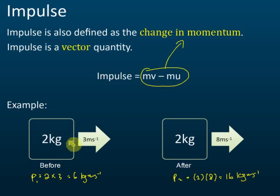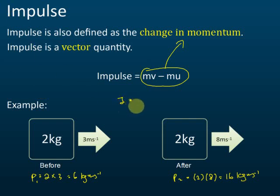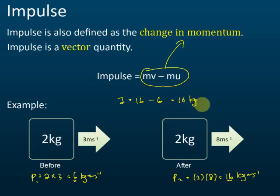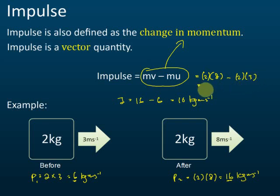When you give a force to this object and cause the velocity to change, we say an impulse is given to the object, because impulse causes momentum change. The impulse I equals the final momentum minus the initial momentum: 16 minus 6, which equals 10 kg m/s. Or using the formula directly: m is 2, v is 8, u is 3, giving 10 kg m/s.